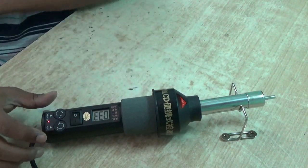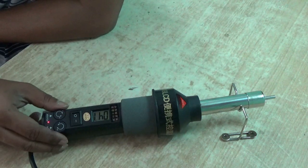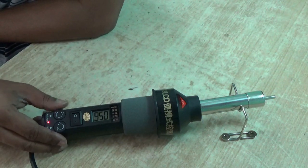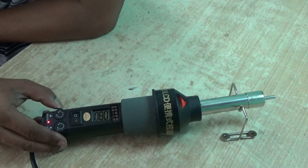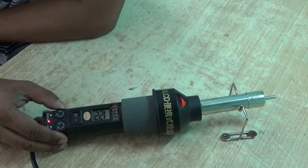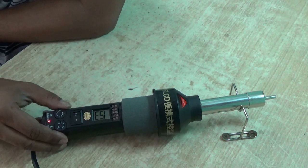You can see there is an LCD display which shows the temperature of the hot air. You can increase the temperature as well as increase the air flow.